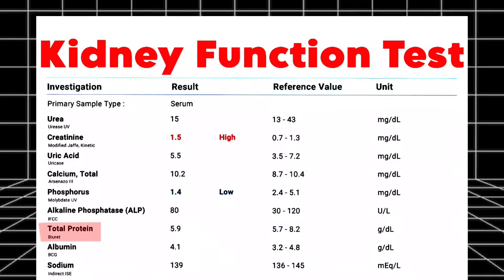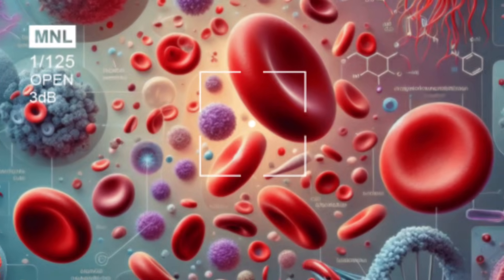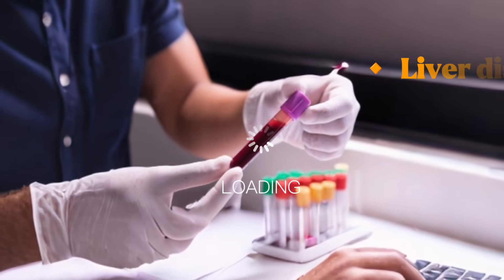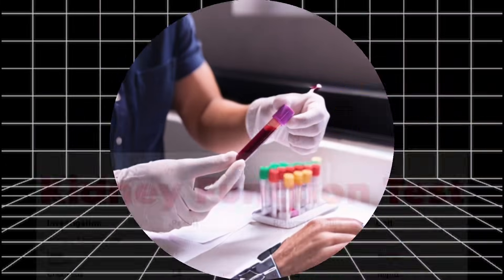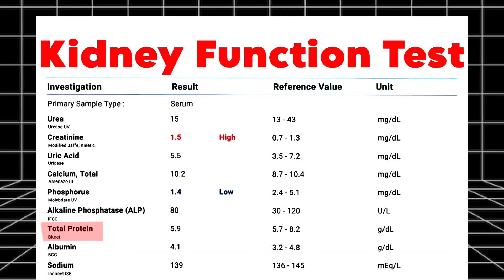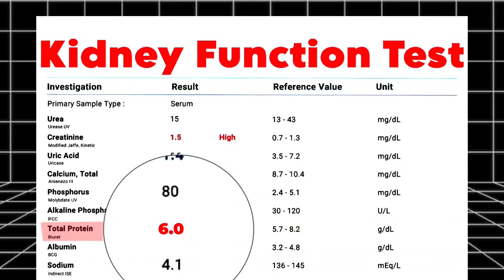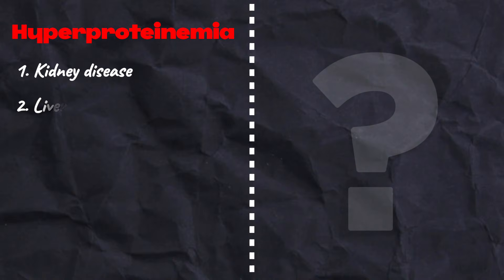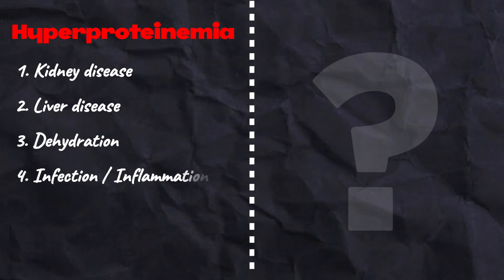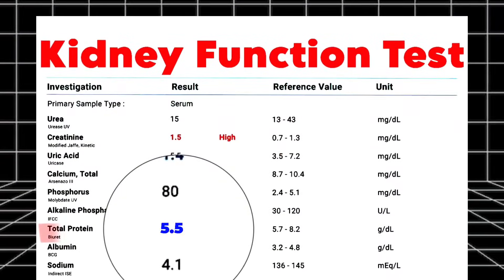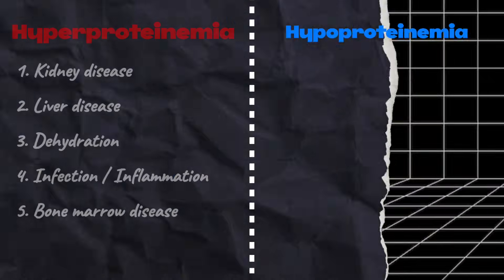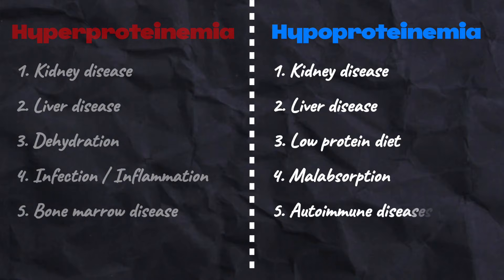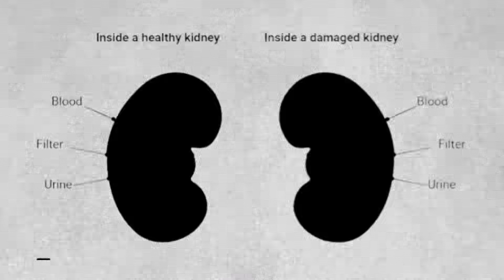Now let's move on to total protein. A total protein test measures the amount of protein in your blood, which can help diagnose kidney disease, liver disease, malnutrition, and inflammation. The normal level of total protein in blood is between 5.7 to 8.2 grams per deciliter. High protein in blood is called hyperproteinemia, seen in kidney disease, liver disease, dehydration, infection or inflammation, and bone marrow diseases.